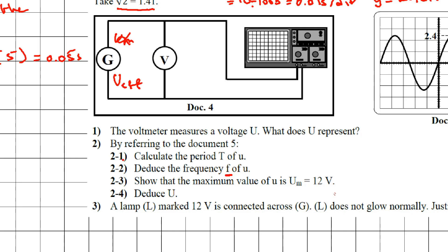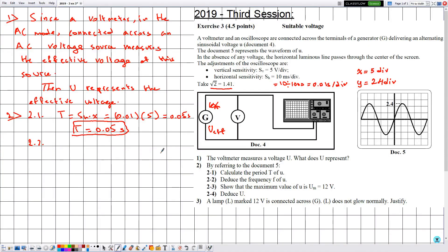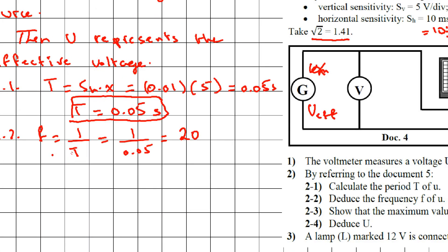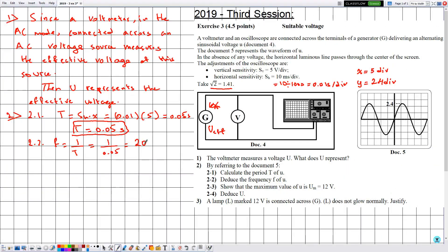In part 2.2, deduce the frequency f of U. 'Deduce' means we use the result from part 2.1 where we calculated the period. Frequency and period are related by f equals 1 divided by T. So f equals 1 divided by 0.05, which gives 20 Hz. The frequency of U is equal to 20 Hertz.